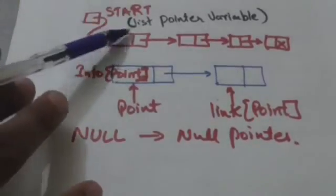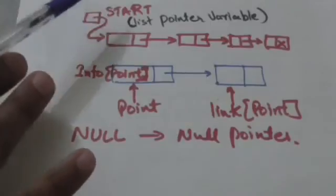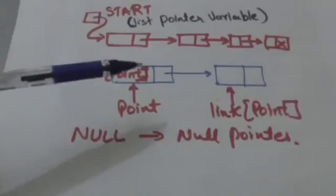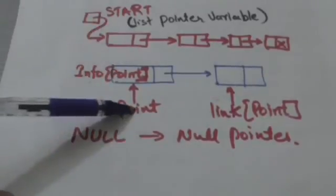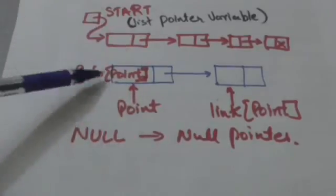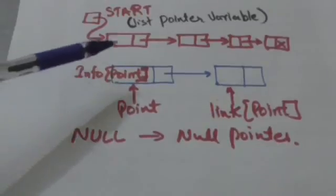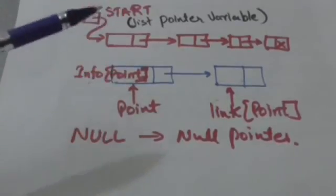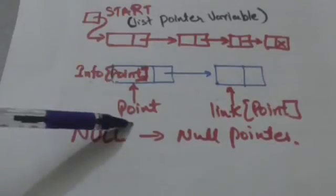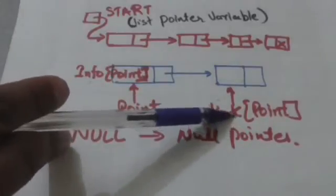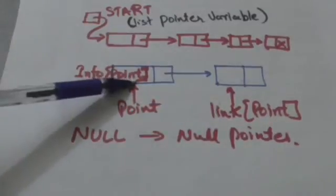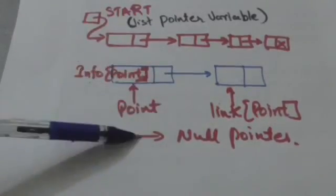Here, start is the list pointer variable of the linked list. Point is a pointer variable which points to the node whose content is currently being compared with the value key. Info(point) denotes the content of the node pointed to by pointer variable point, and link(point) is the value of the next pointer field of the node pointed to by pointer variable point.